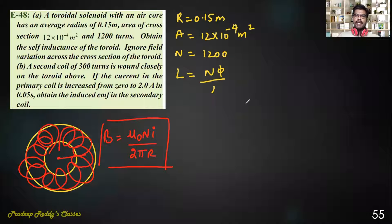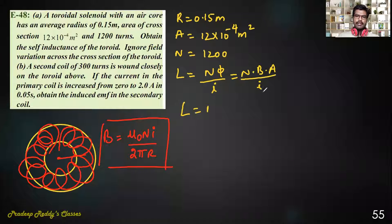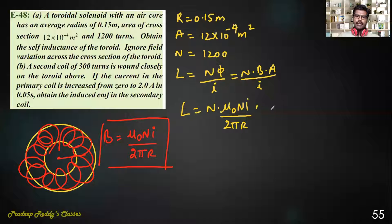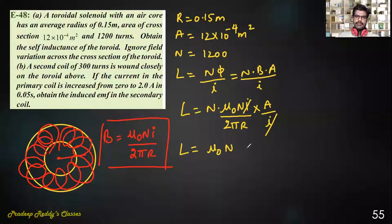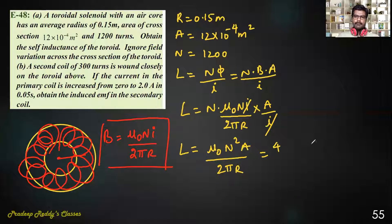Self inductance L = Nφ / I = N × B × A / I. Substituting B = μ₀NI / (2πR), we get L = μ₀N²A / (2πR). This is the formula for self inductance of a toroidal solenoid.